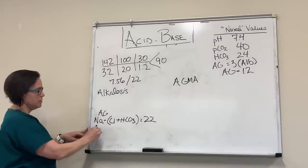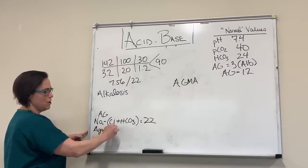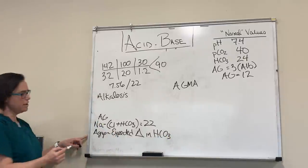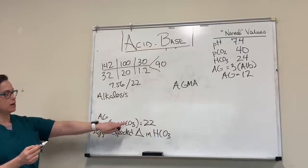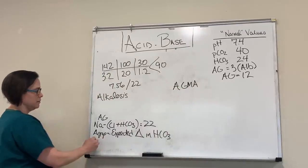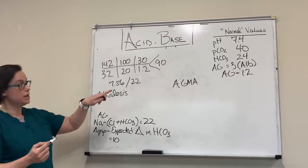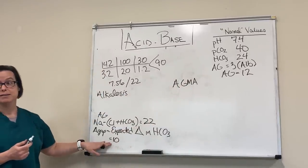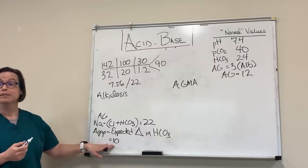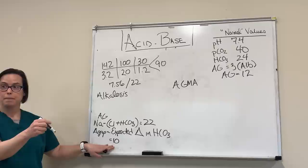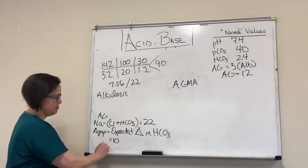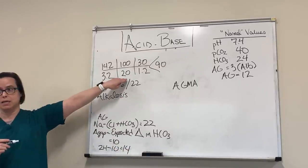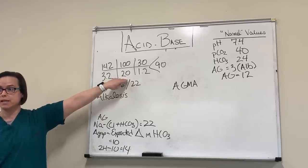Next step — delta gap. Delta gap equals anion gap minus normal: 22 minus 12 equals 10. That's our expected change in bicarb. Normal bicarb is 24. Acidosis makes it go down 10, so we expect it to be 14. But our actual bicarb is 20. We expect 14 but it's 20, so we're retaining bicarb — that's a metabolic alkalosis. That's why we have such a high pH.